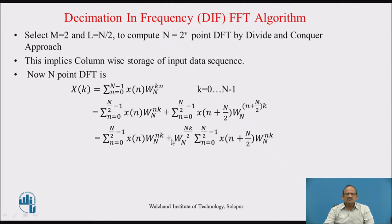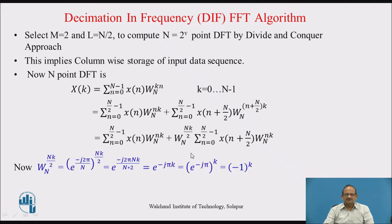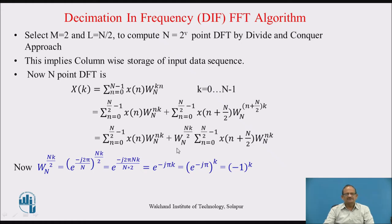This can be written so that the first part remains as it is, but in the second part we have W_N^(nk) and W_N^(N/2 · k). The term W_N^(N/2 · k) is taken outside, and in the summation it is written as summation n=0 to N/2 minus 1 of x(n + N/2) W_N^(nk). Now W_N^(N/2 · k) equals e raised to minus j 2 pi by N, raised to N·k/2, which gives e raised to minus j pi k. Since 2 and 2 cancel and n cancels, this becomes e raised to minus j pi k, which equals (e raised to minus j pi) raised to k, and since e raised to minus j pi is minus 1, this term equals minus 1 raised to k.